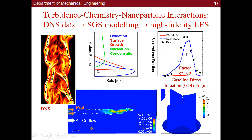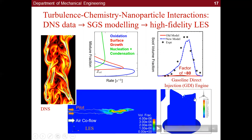Based on that, we do subgrid-scale modeling to enable high-fidelity large eddy simulation. Here is an example showing our new model improved accuracy by a factor of 80 compared to the traditional model. We use it to conduct large eddy simulation for jet flames and also apply it to gasoline direct injection engines — the next-generation IC engine.